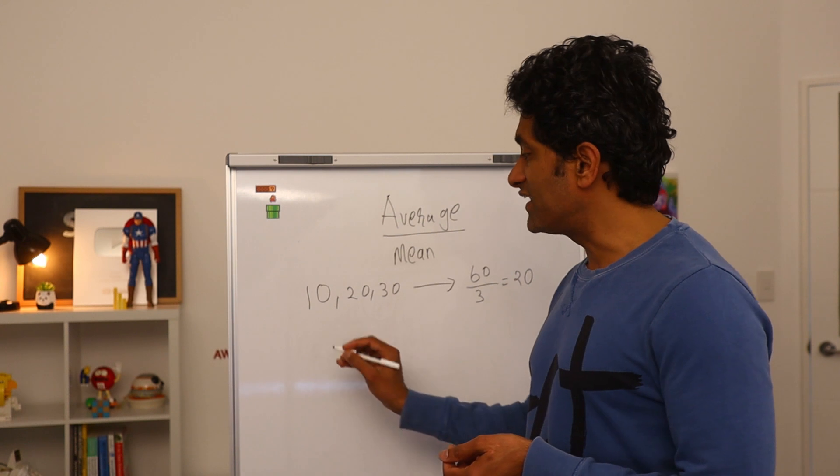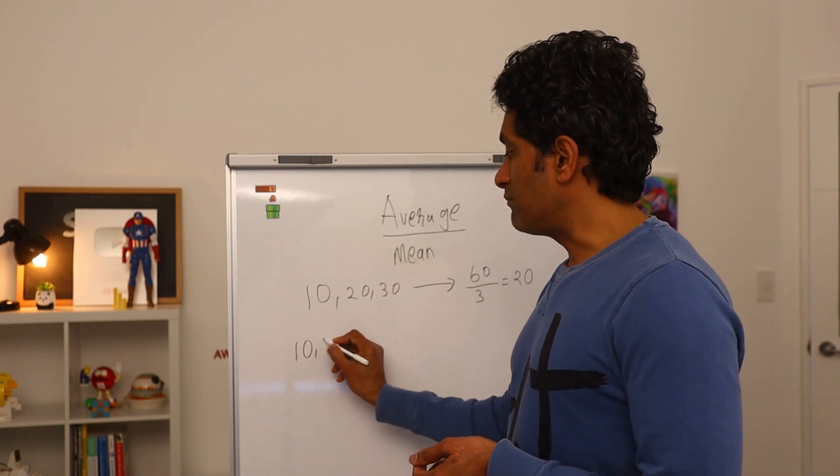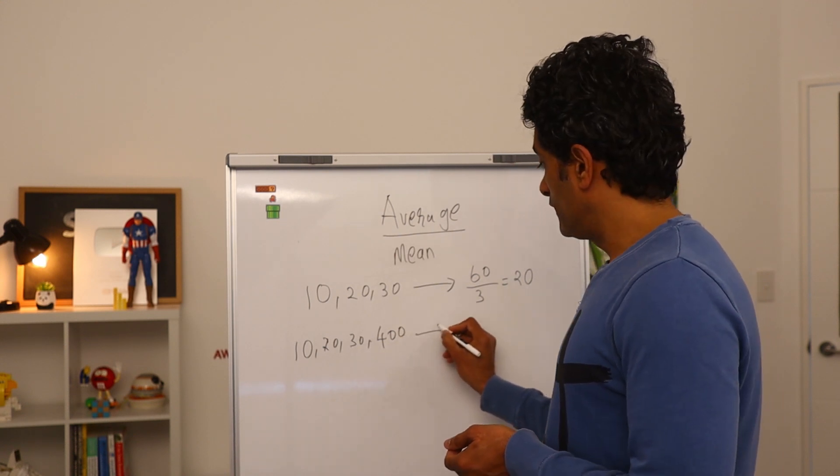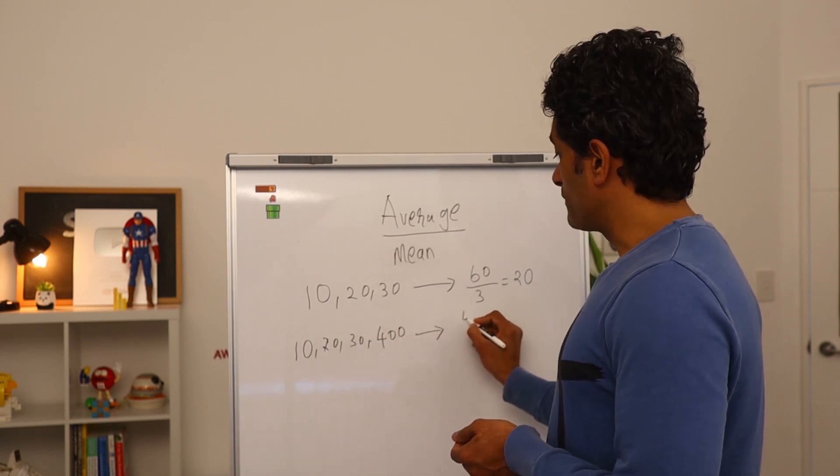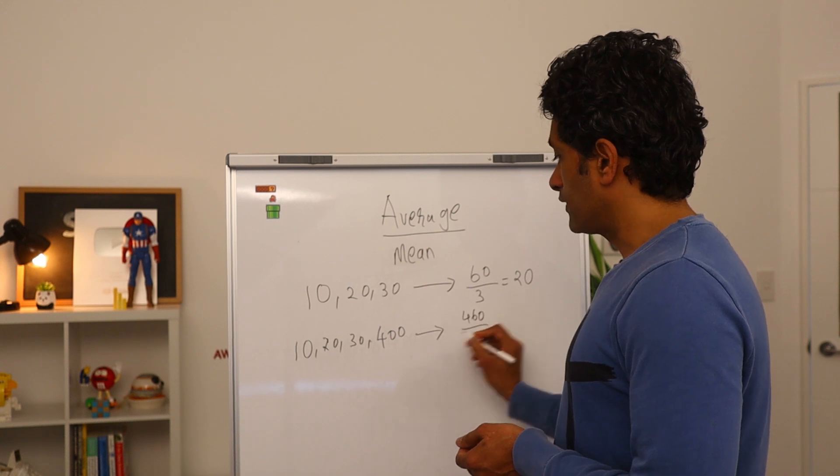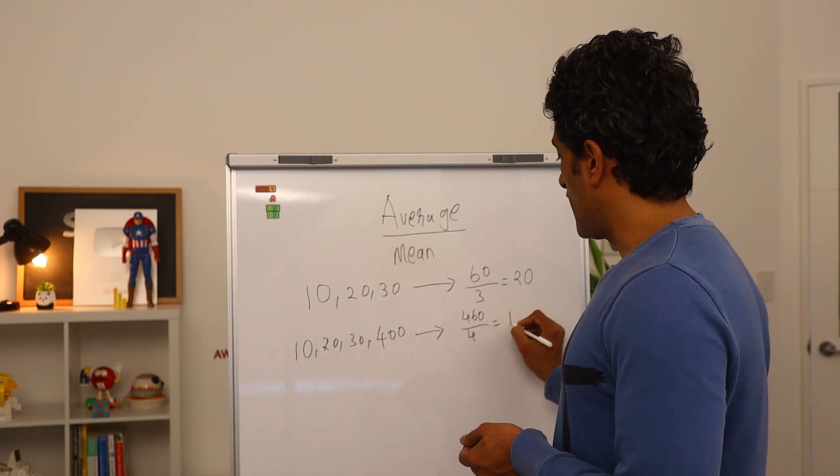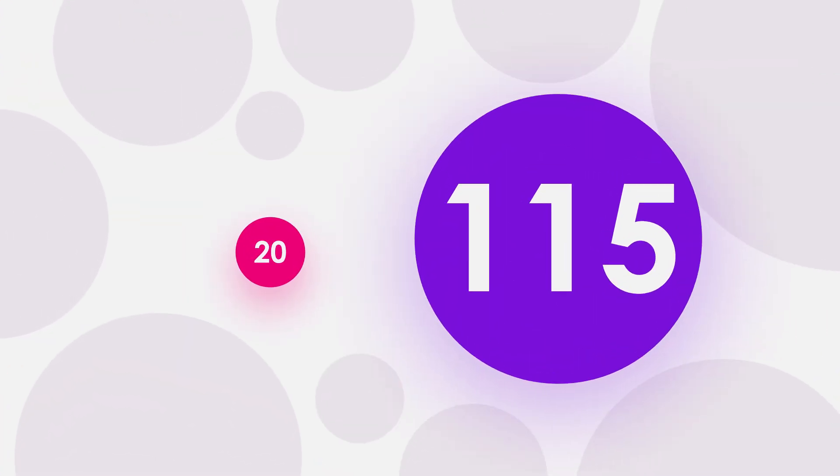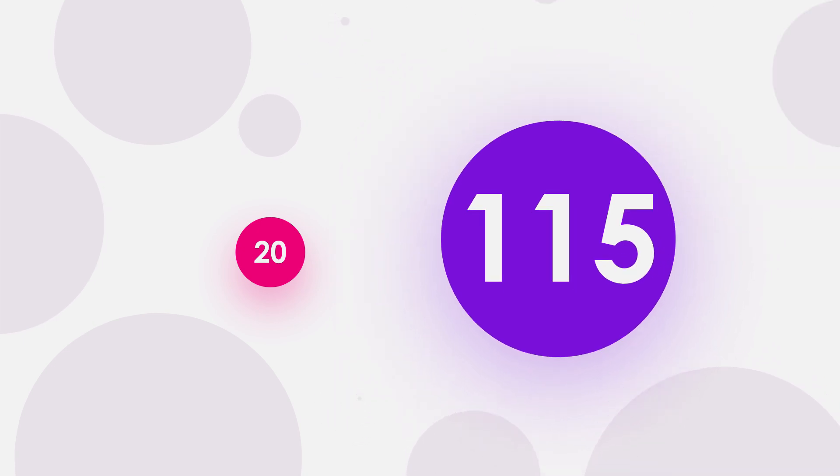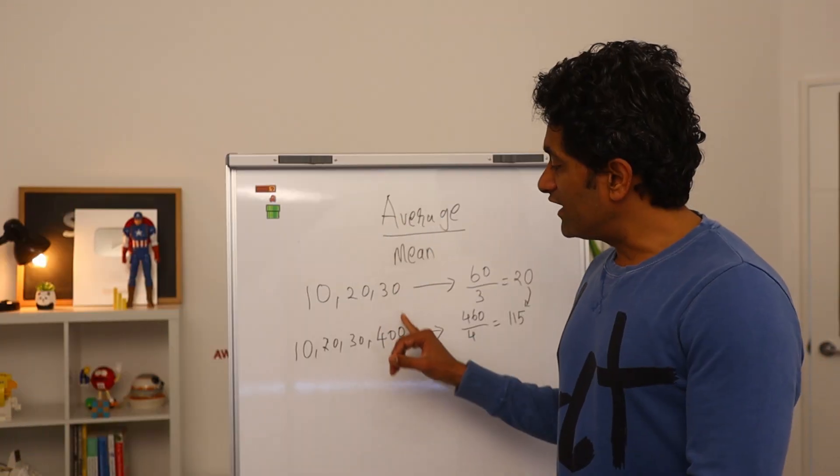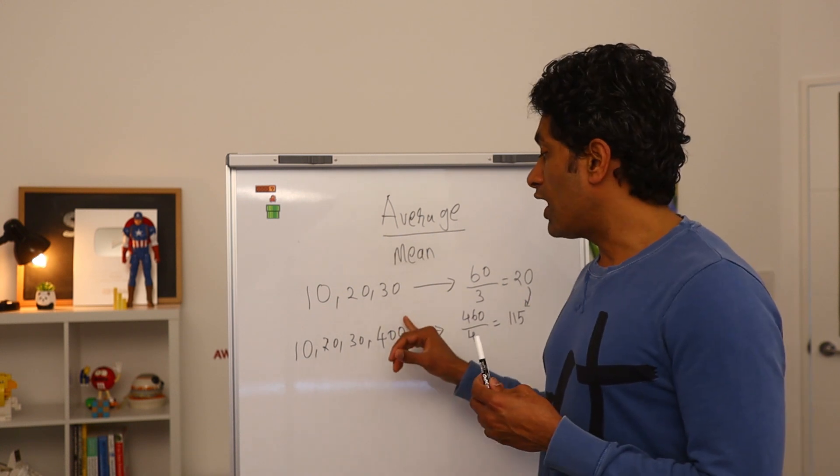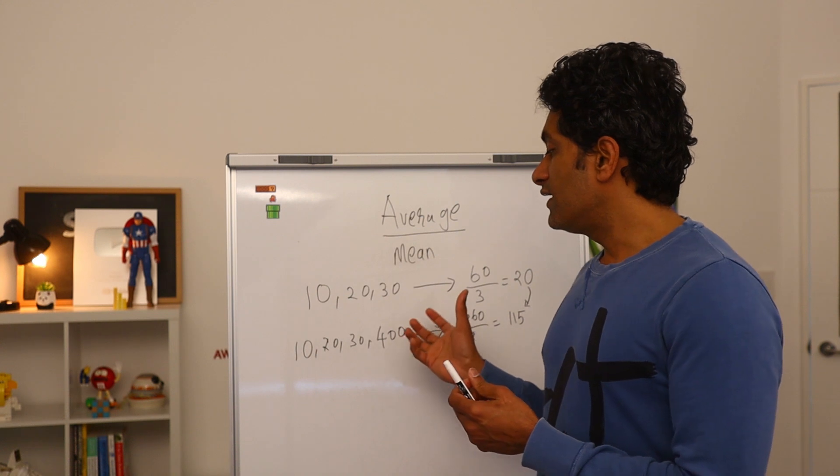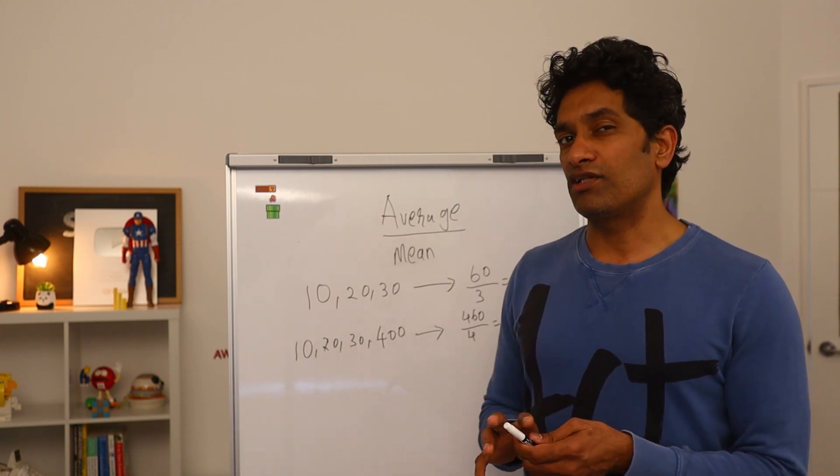Now see what happens with the Bill Gates scenario. Same numbers. Now we throw in a really large number like 400. The total of this group becomes 460, count of the group becomes 4, so the average becomes 115. Such a massive jump between 20 to 115. But because they can kind of change a lot depending on how high or low one of the values or sum of the values is, they don't really present a full picture of the data.